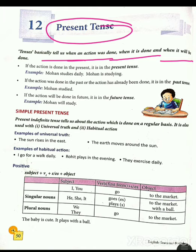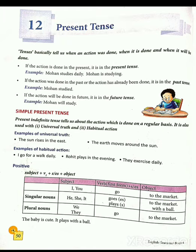If the action is done in the present — agar koi action present mein hota hai — it is in the present tense. Tab isko hum kya bolenge? Vartaman kaal — present tense.